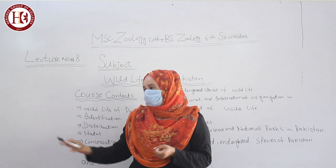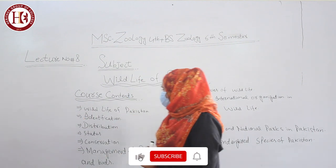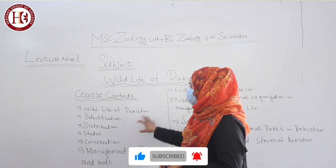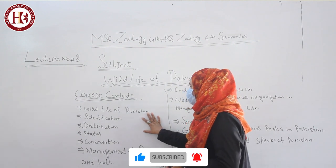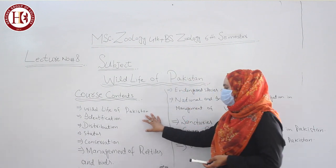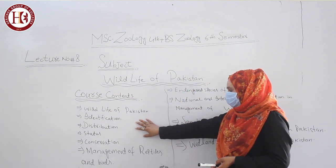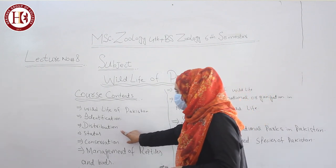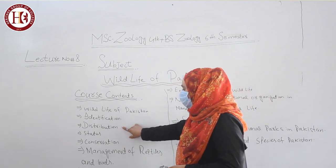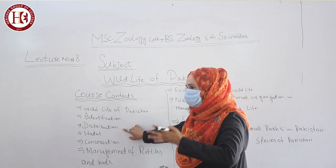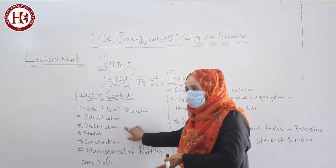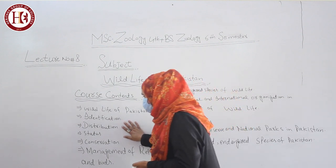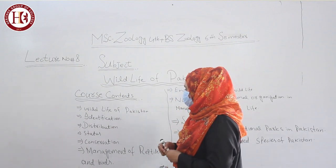After identification, we cover distribution — what is the distribution of wildlife of Pakistan? We look at different varieties, different mammals and birds, and their distribution across Pakistan, including Balochistan, Sindh, and northern and southern areas. You have to find out their distribution and examine their status.